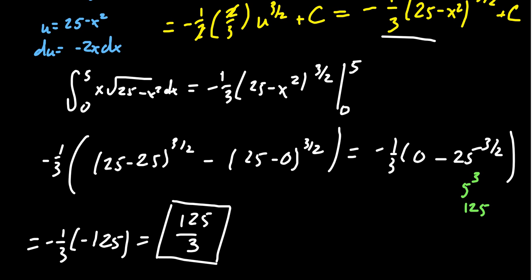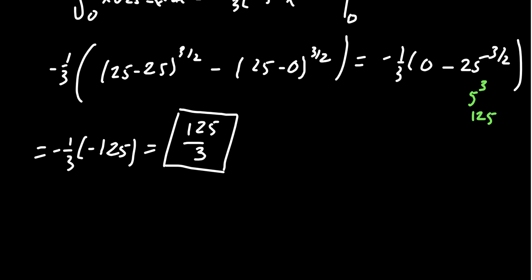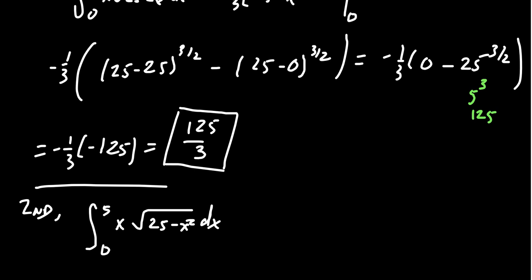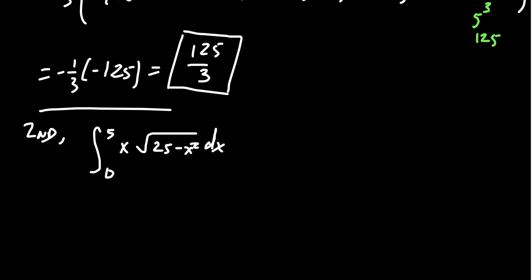This is a perfectly acceptable way of computing these definite integrals. What I want to do is approach this problem from a second perspective. If we integrate from 0 to 5, x times the square root of 25 minus x squared dx, what if we don't bother with the indefinite integral first? Could we start with the definite integral?